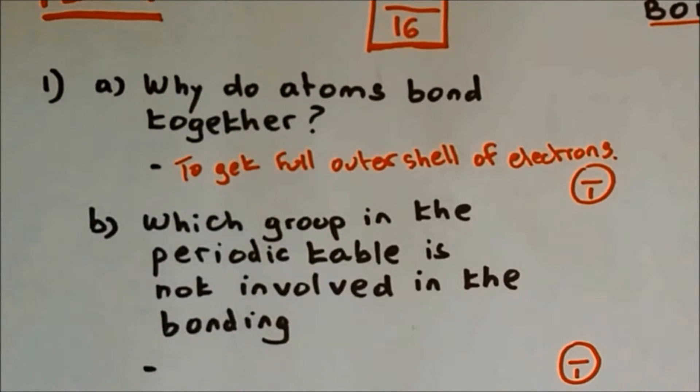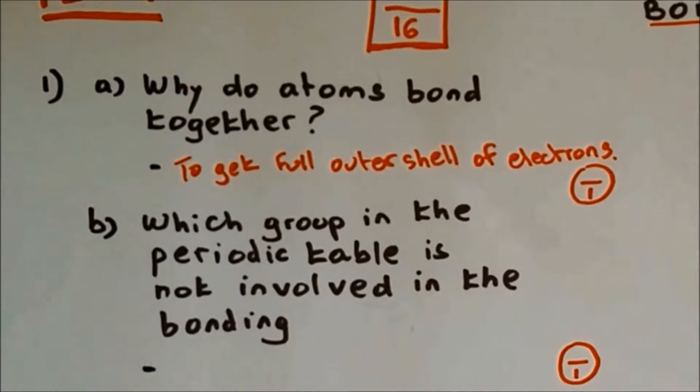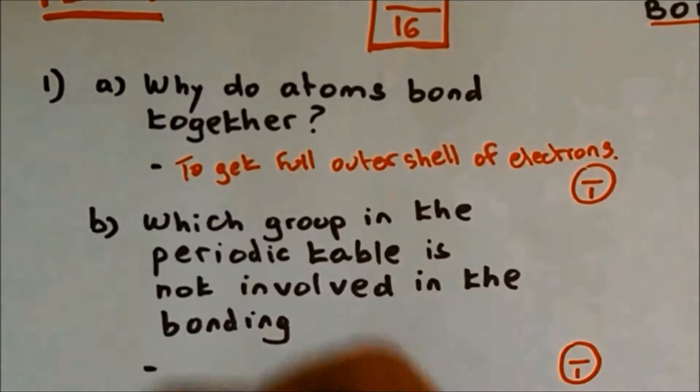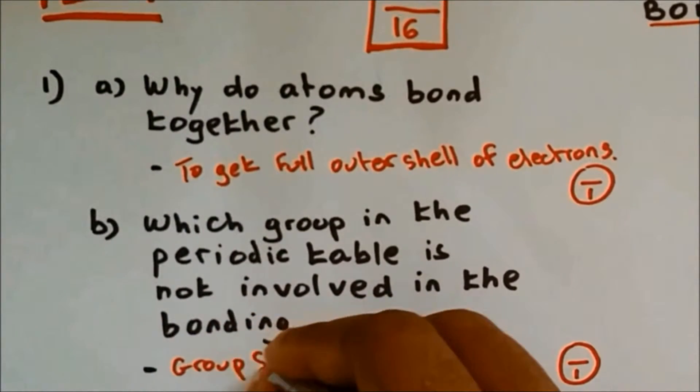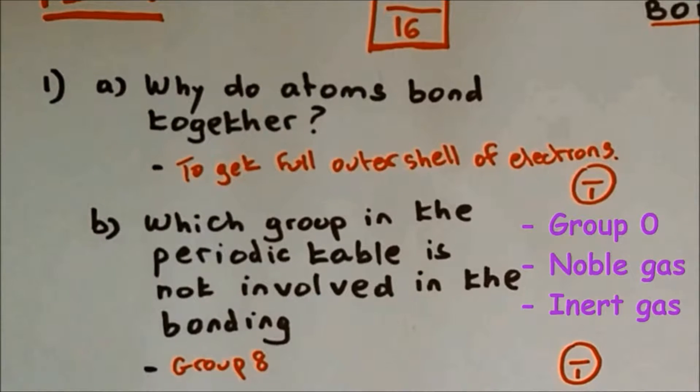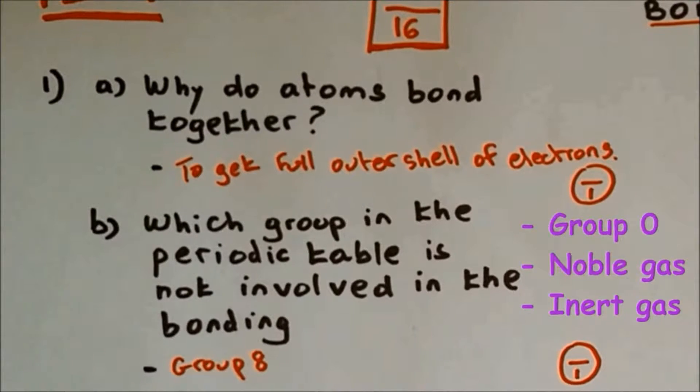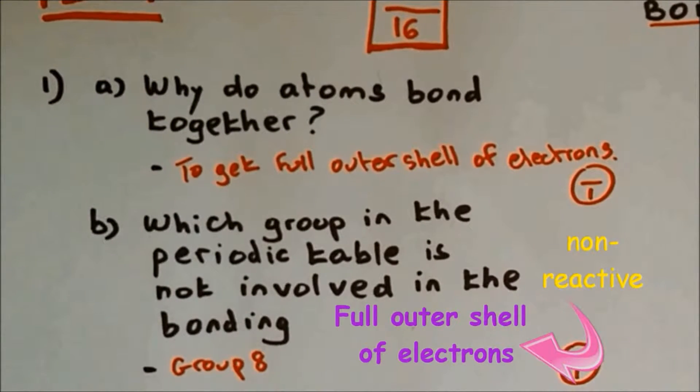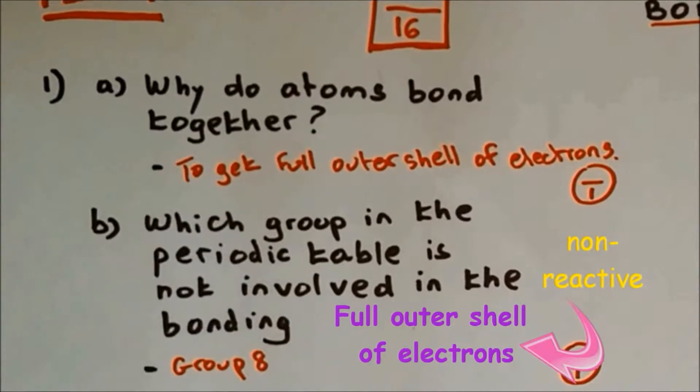Question 1b: Which group in the periodic table is not involved in bonding? The answer is Group 8, which can also be called Group 0. Other names for Group 8 are noble gases or inert gases. The word inert means non-reactive. The reason why they don't react with any other substance is because they have a full outer shell of electrons.